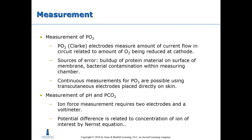Measurement of pO2 uses Clark electrodes, which measure the amount of current flow in a circuit related to the amount of oxygen being reduced at the cathode. Sources of error include the buildup of protein material on the surface of the membrane and bacterial contamination within the measuring chamber.